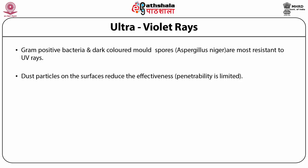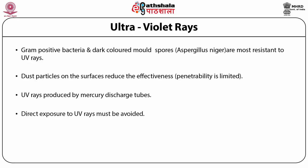The penetration ability of UV rays is very limited. UV rays are produced by mercury discharge tubes fitted with quartz windows for transmission of UV rays with minimum absorption. These units are relatively inexpensive. UV radiation is harmful to humans, particularly to the skin, so direct exposure to UV rays must be avoided. Combination of UV rays with organic acid or hydrogen peroxide is found to be more lethal.